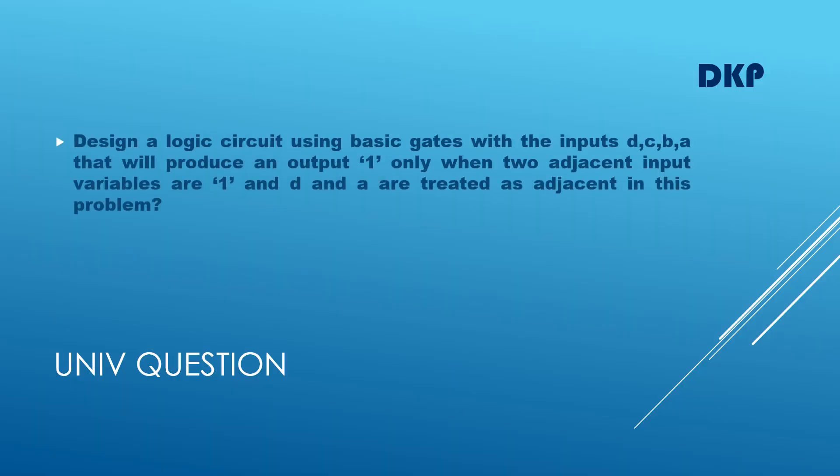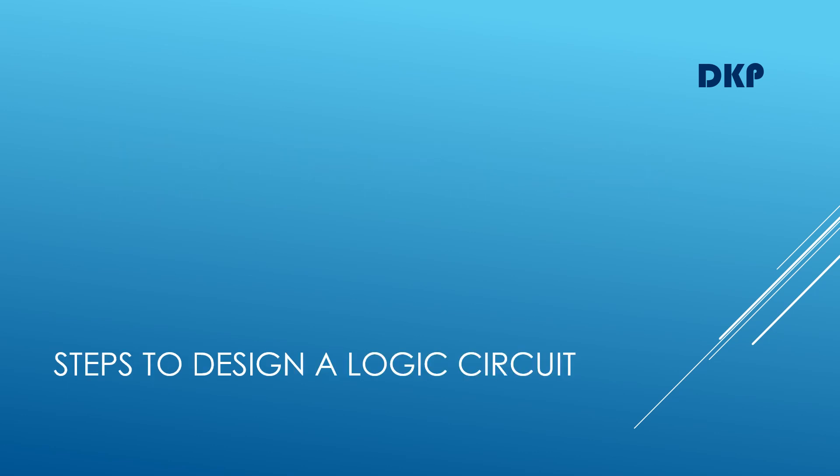Here is the question: Design a logic circuit using basic gates with the inputs DCBA that will produce an output 1 only when two adjacent input variables are 1, and D and A are treated as adjacent in this problem.